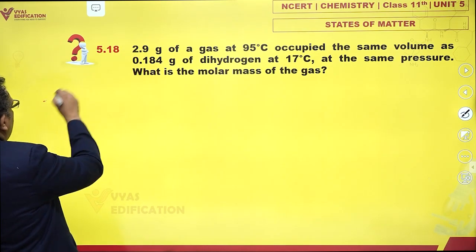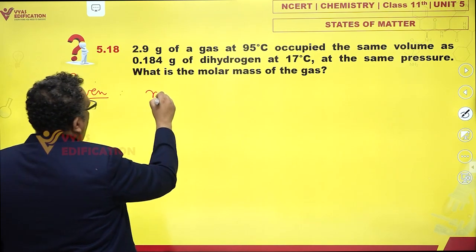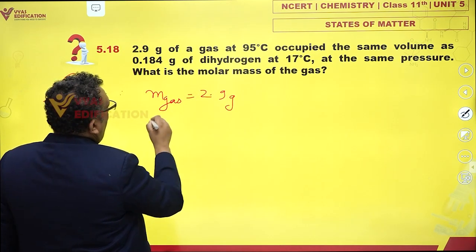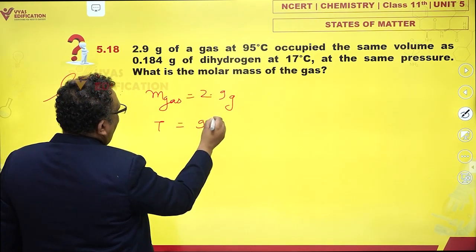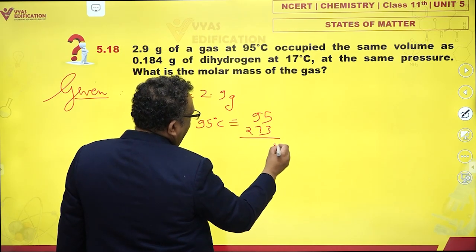2.9 grams, please note down the data. Mass of gas is 2.9 grams of a gas at 95 degrees Celsius. 95 and 273, if you add, 8...